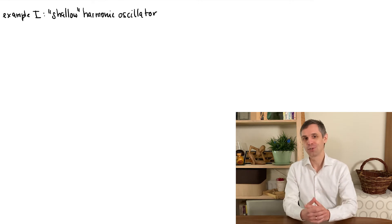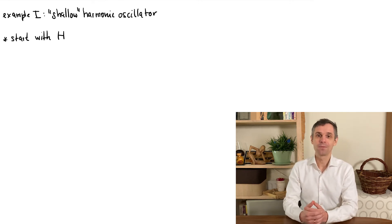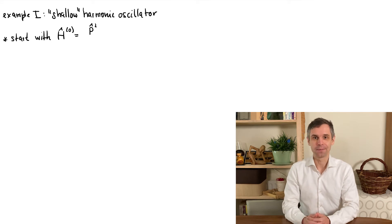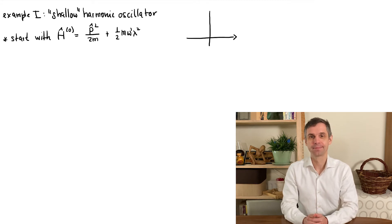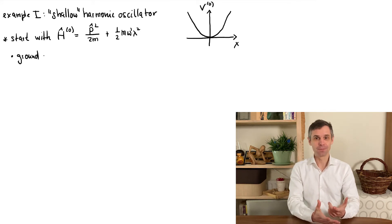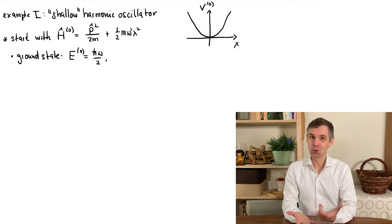Now I will illustrate perturbation theory by a few examples. In all of these, the quantum system from which we start is the harmonic oscillator. As you recall, the harmonic oscillator is described by a parabolic potential. The ground state energy is given by h-bar omega divided by 2, while the ground state wave function looks like a Gaussian.